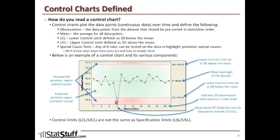Control limits are not the same thing as spec limits like the LSL or USL. Spec limits are what's tied to the voice of the customer — they help define what the customer requires or their expectations. Control limits are very different because they're based off of three standard deviations from the mean.